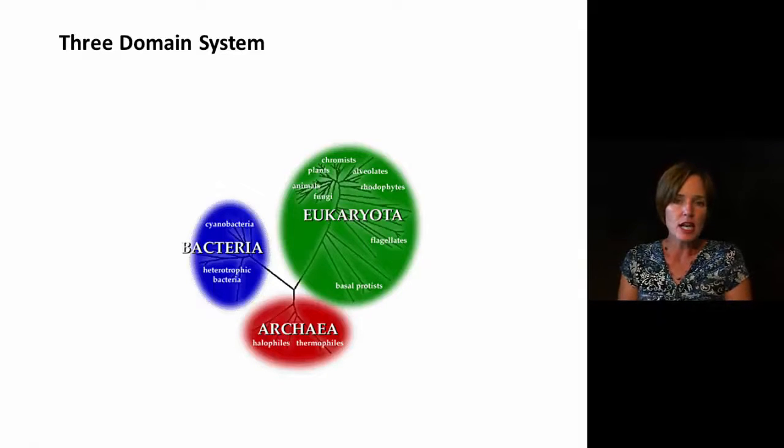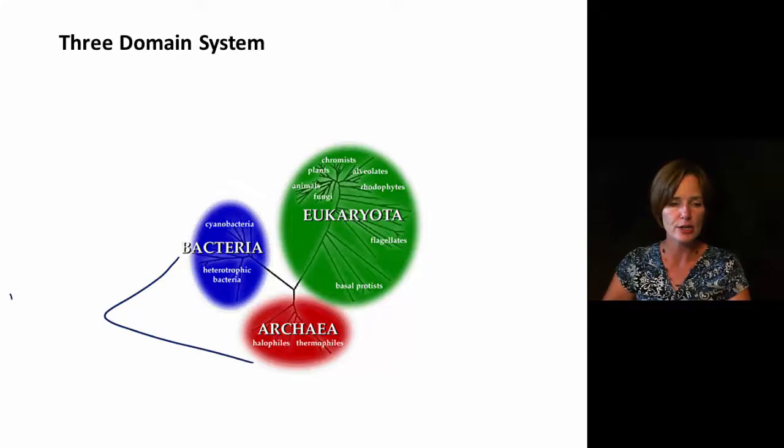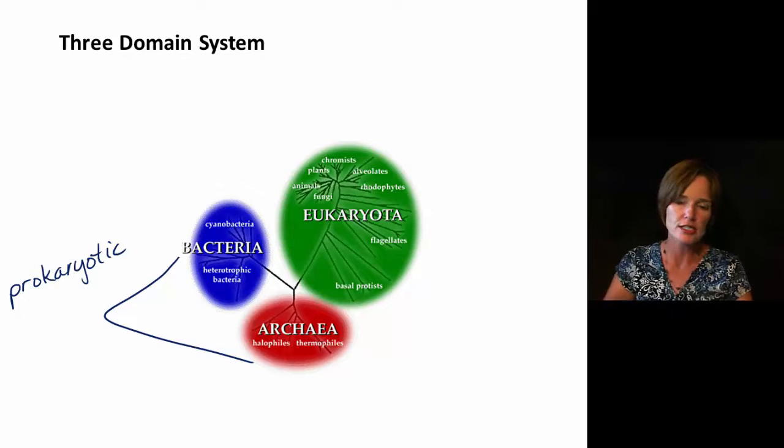At this point in time, most scientists have agreed on what we call the three domain system. The three domain system identifies three major branches of living organisms, and two of those branches are going to be prokaryotes. Our two prokaryotic branches are bacteria and archaea. So those are made up of prokaryotic cells.